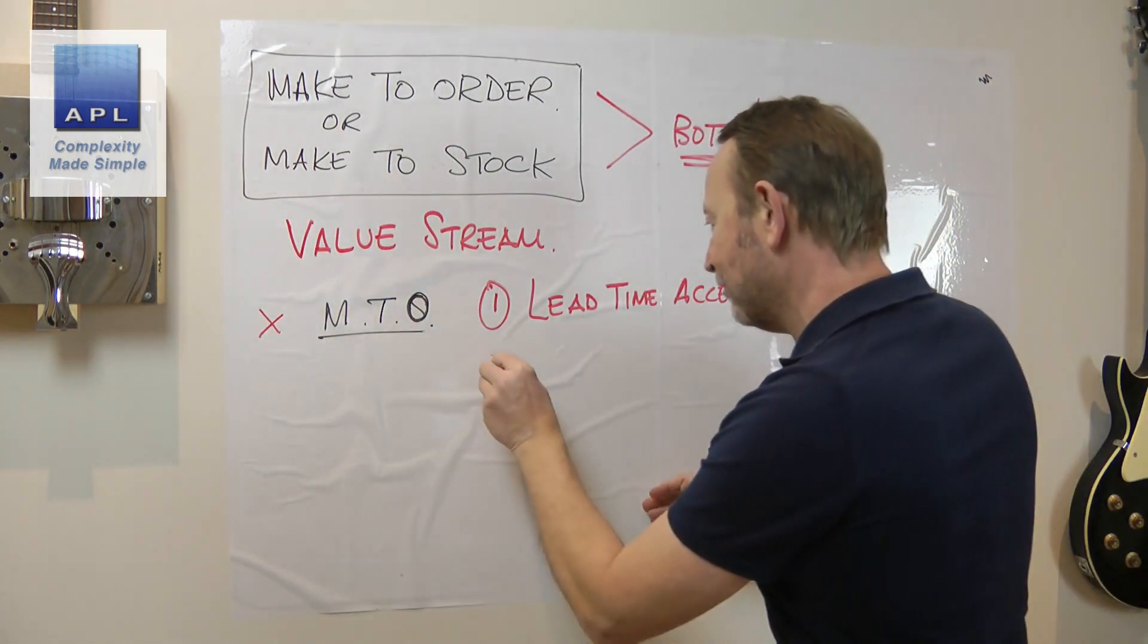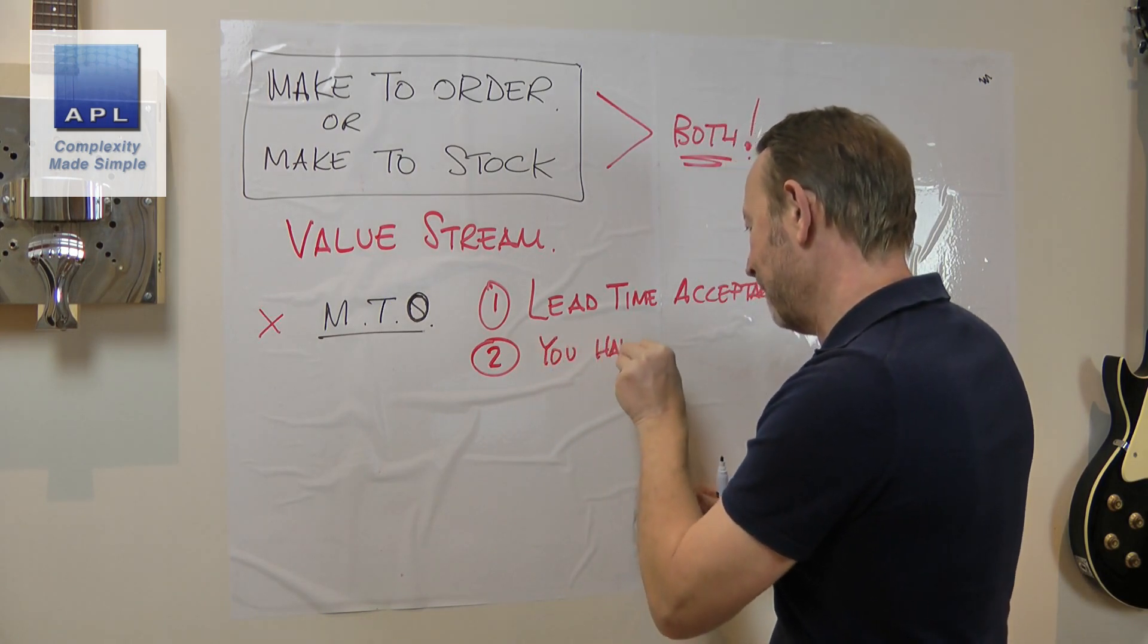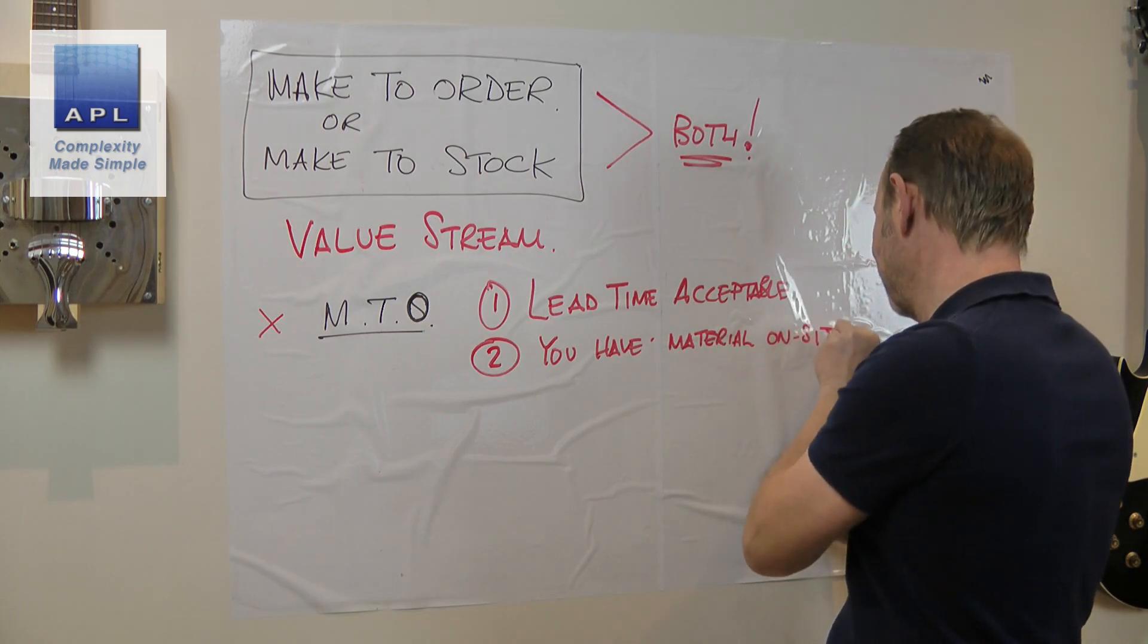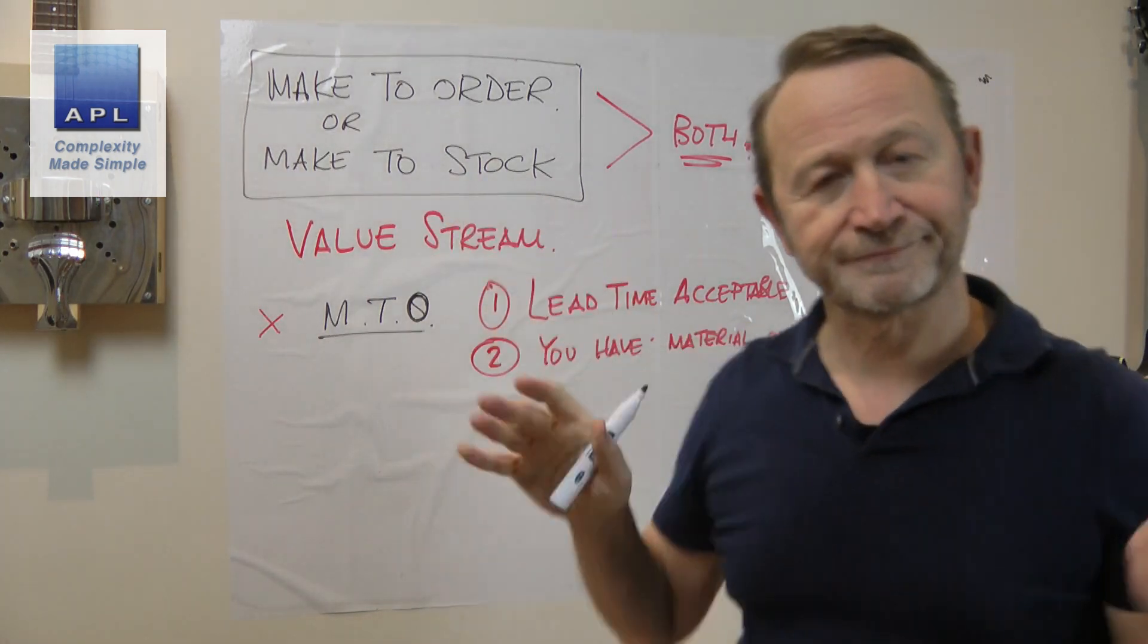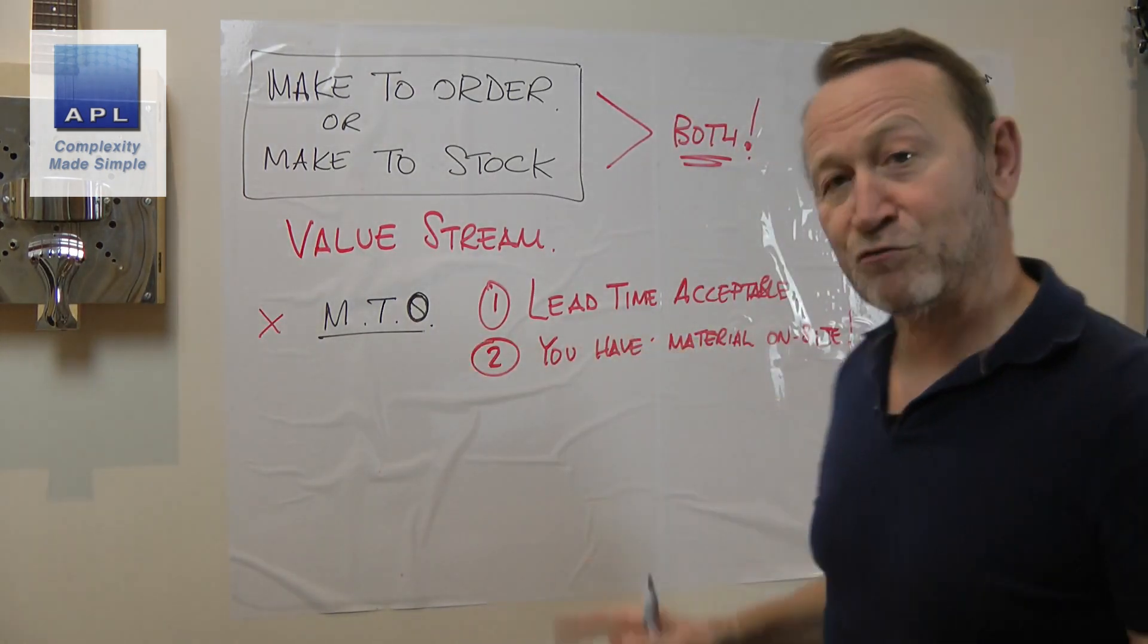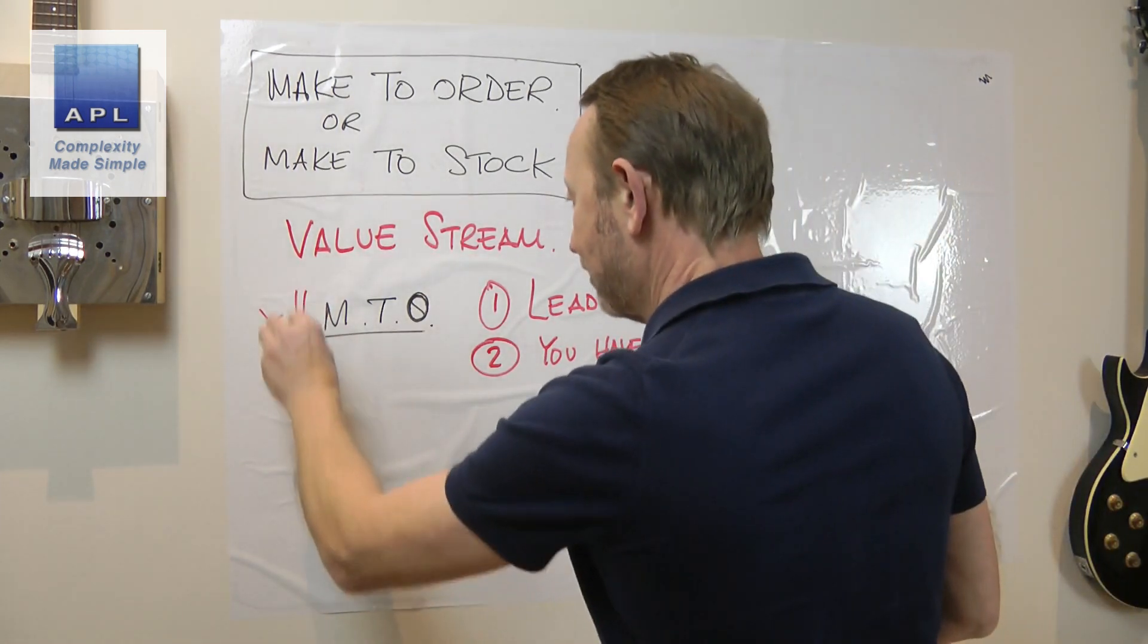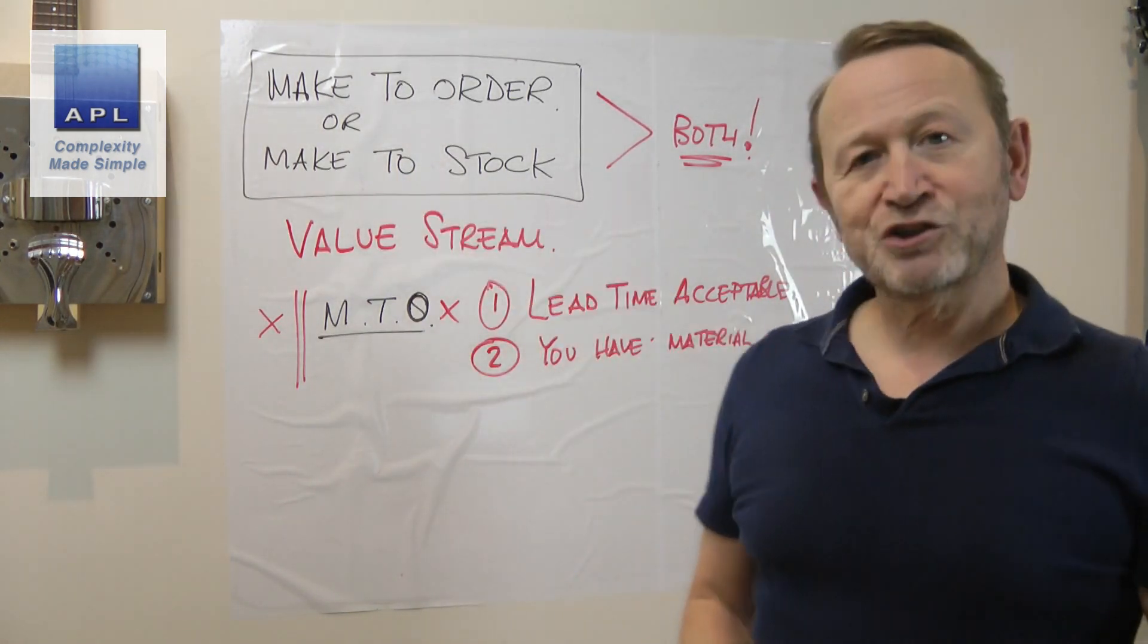The second requirement is you have material on site. In other words, you probably buy to stock, you don't buy to order. So if you're going to do this, you're going to have the raw material so you can just do it and the lead time is going to be acceptable to the market. If those two are not the case, this is not acceptable.